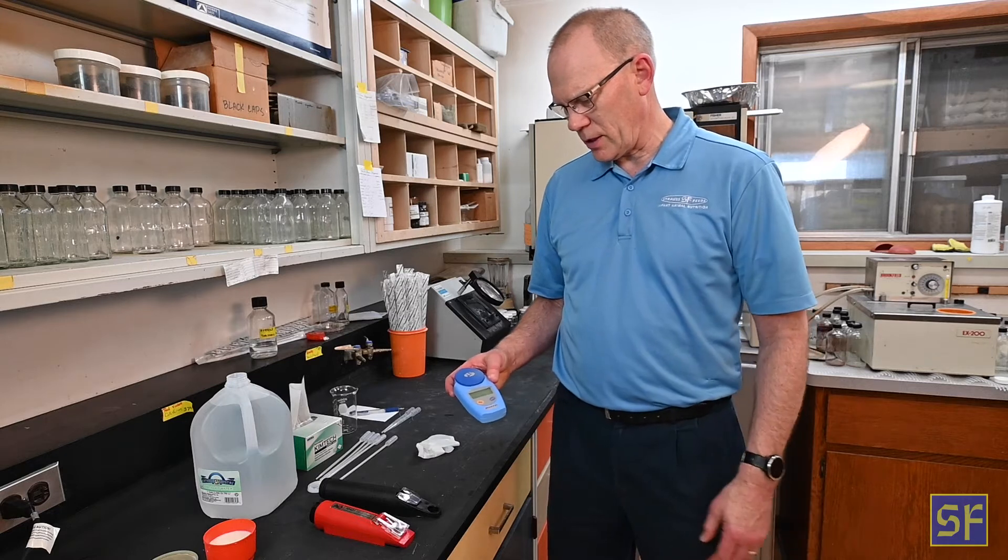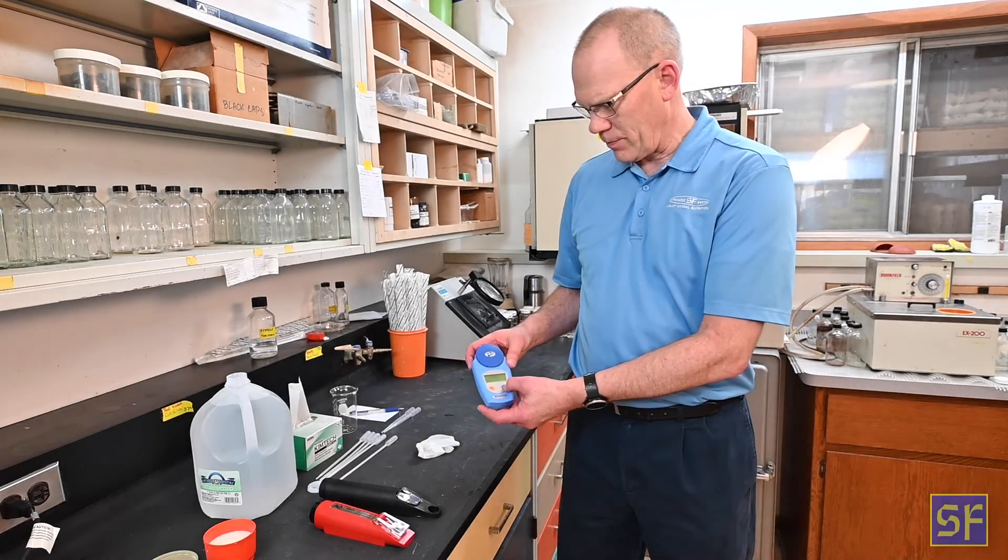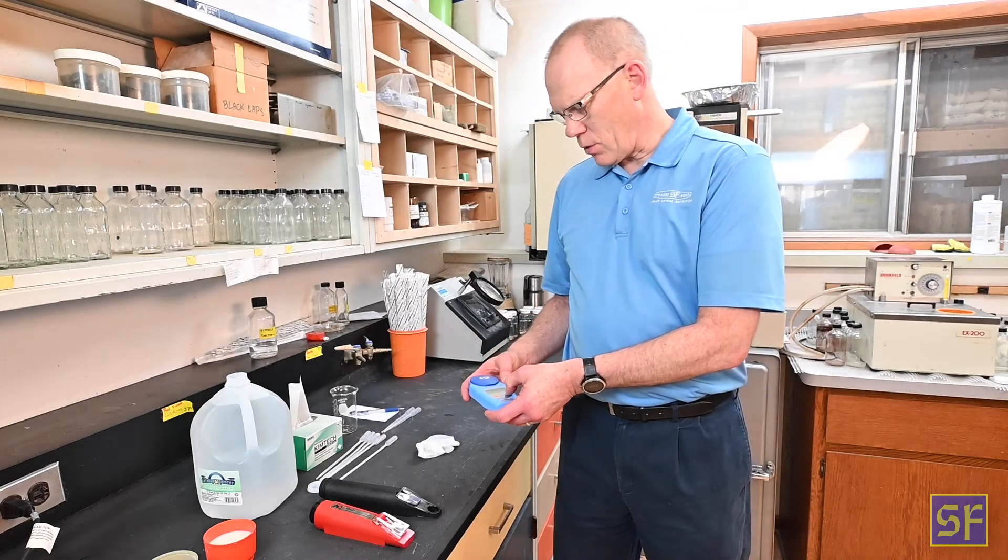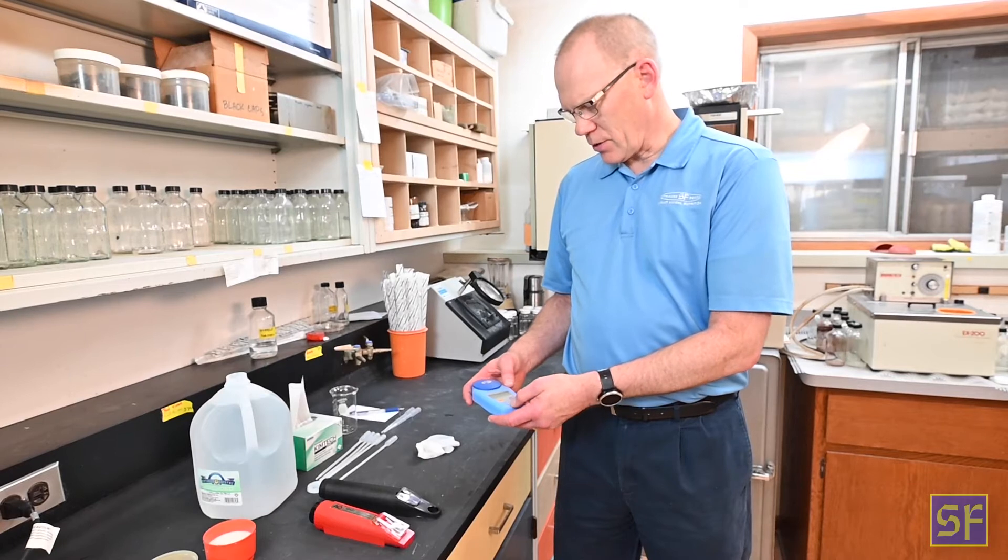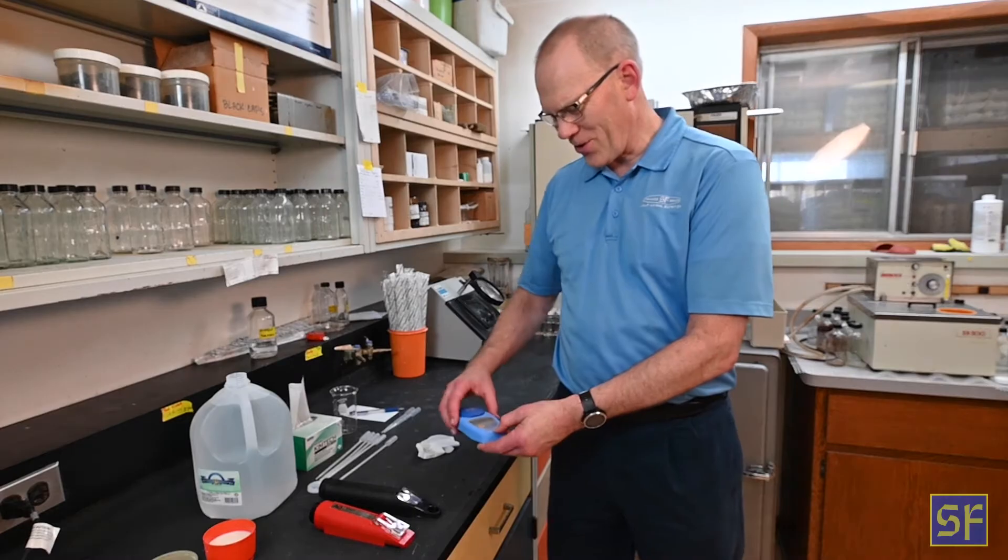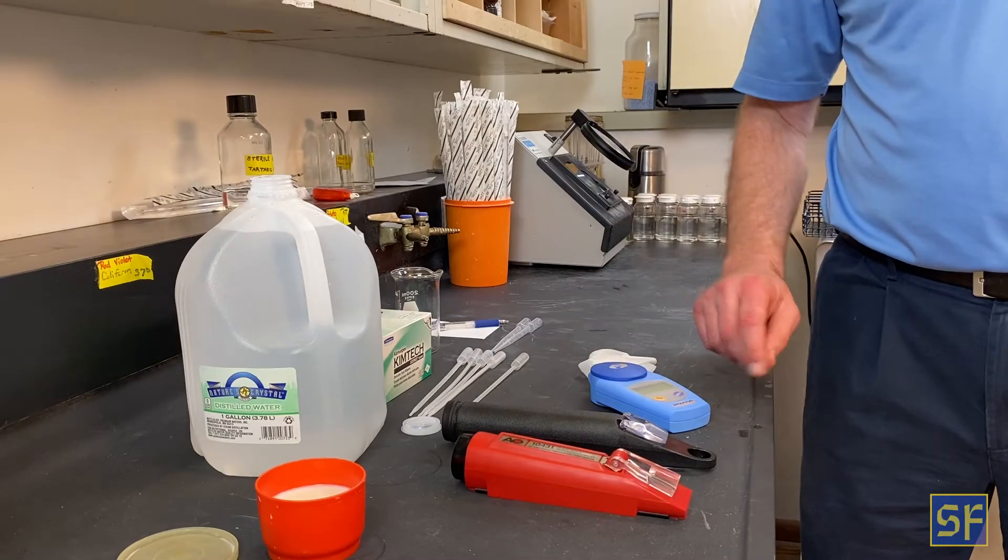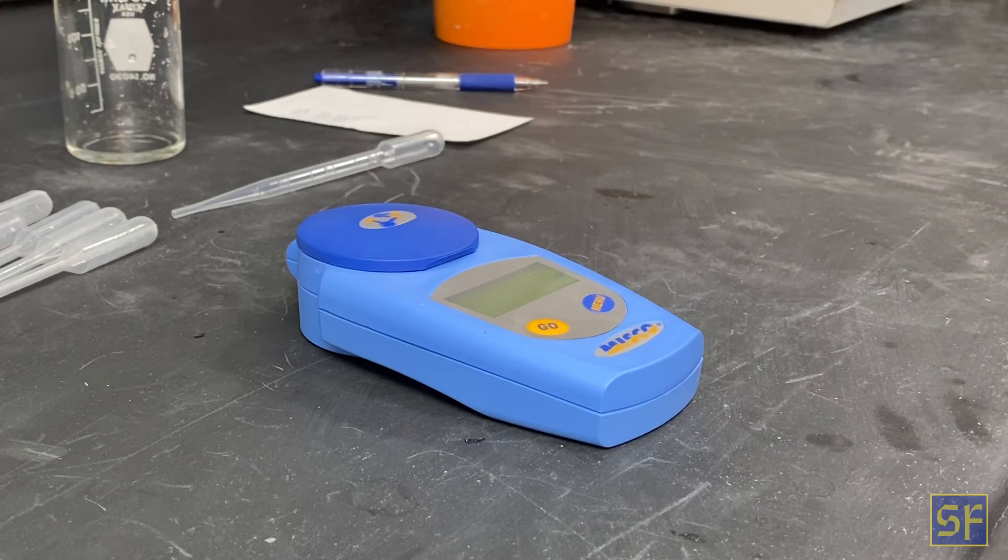Turn the unit on. This one is a MISCO unit. Just press the go button here. You can see it's booting up. I'm going to slide the menu over to set zero, and seeing how I tipped it, yeah, I'm still okay. It's still enough water in there. It's on the lens. Set zero and I hit go and it's reading it.